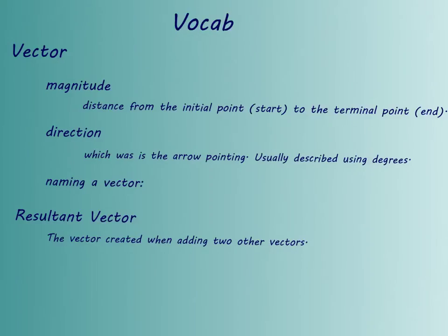We're going to begin with some vocabulary. The word vector, and also magnitude and direction. These are two things that are really important with vectors. The magnitude tells us the distance from the initial point, which is where it's starting, to the terminal point, which is where it's ending. The direction is just telling us which way the arrow is pointing, and usually it's described using degrees.